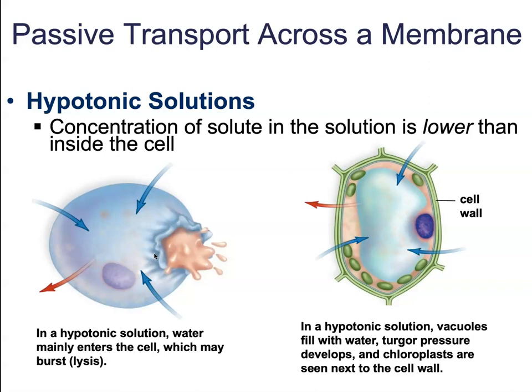Plant cells placed in a hypotonic solution will also swell. However, due to the presence of a cell wall, the cell will not burst. Instead, it creates what we call turgor pressure. This is important for maintaining the posture and structure of a plant. So if you want to keep your plants tall and healthy, feed them plenty of fresh water to help maintain that turgor pressure.